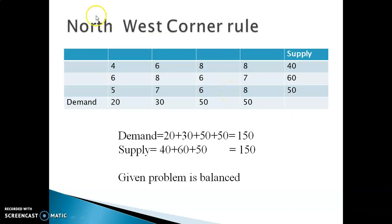Now let me start with the first method: the Northwest Corner Rule. In this method, allocate the maximum feasible quantity to the left uppermost corner cell. Before that, check whether supply equals demand. Here, supply is 40 plus 60 plus 50, which is 150. Demand is 20 plus 30 plus 50 plus 50, which is also 150. So the given problem is balanced.